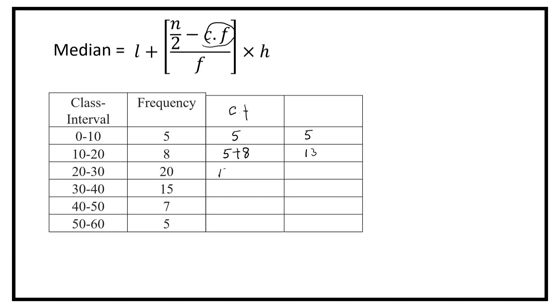In the next one, 13 plus 20, that is 33. 33 plus 15, that is equal to 48. 48 plus 7 is equal to 55. 55 plus 5 is equal to 60.